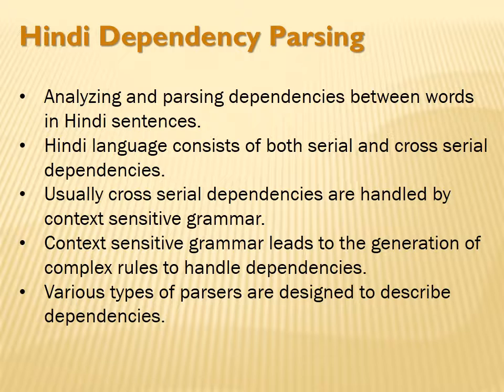Serial dependency means the dependent lines do not intersect with each other in any sentence, and cross-serial dependency means that dependent lines intersect each other in a Hindi sentence. Usually, cross-serial dependencies are handled by context-sensitive grammar.